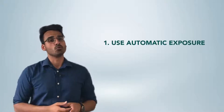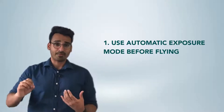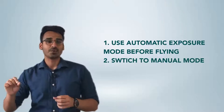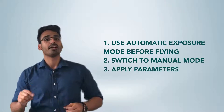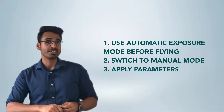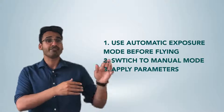One option is to use the automatic exposure mode on the flight day to discover the correct exposure parameters before the flight, and then switch over to manual exposure mode and apply the shutter speed, ISO, and white balance properties manually. You let the automatic exposure mode figure out the parameters beforehand, and then apply them in manual mode. This will ensure that you have the correct exposure parameters throughout the flight and they do not change during the flight.